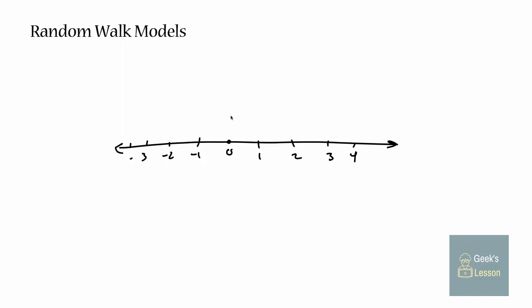In a one-dimensional random walk, the process starts at zero. Every time point you flip a coin. If it's heads, I go to the right one step; if it's tails, I go to the left one step. That's a simple random walk.